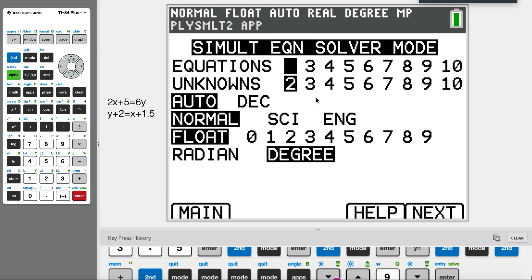After you enter, you can choose how many equations you have and how many unknowns. Unknowns are basically x, y, and z, or a, b, c—the variables you don't know about. An equation is basically a number of clues you have. For instance, let's now look at our question for this video. Our first equation is 2x plus 5 equals 6y, and we have y plus 2 equals x plus 1.5. So we have two equations and two unknowns, that is x and y.